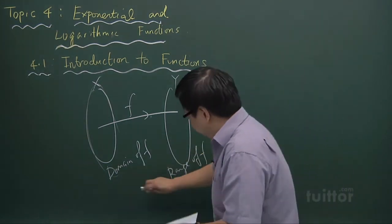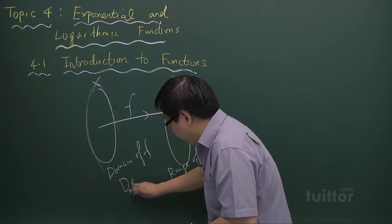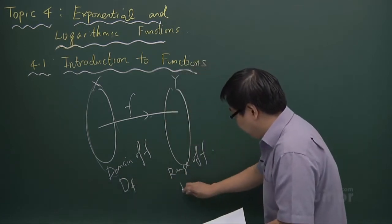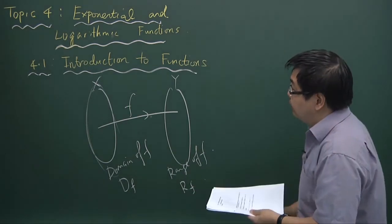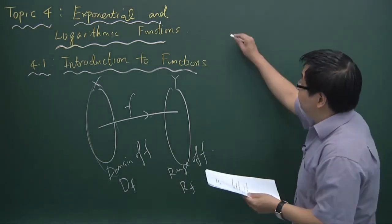The domain of f is denoted by D of f and the range of f is denoted as R of f. Let me just give examples of some functions.